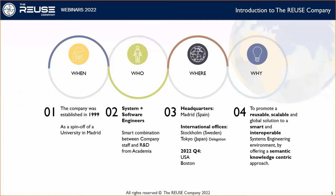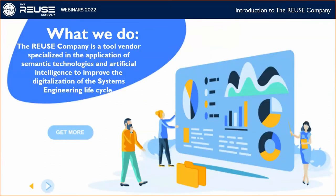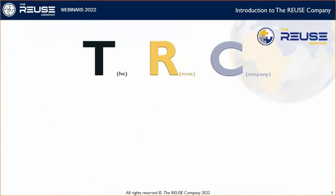Our headquarters is still in Madrid, Spain. We have an office in Stockholm and a special delegation in Tokyo. We aim at opening our branch in the U.S. in the last quarter of this year — still don't know the final location, but probably it's going to be Boston. We at The Reuse Company are a tool vendor specialized in the application of semantic technologies and artificial intelligence to improve the digitalization of the systems engineering life cycle, and this is what we wanted to demonstrate today in this webinar.